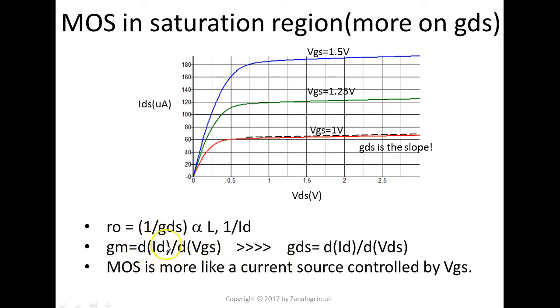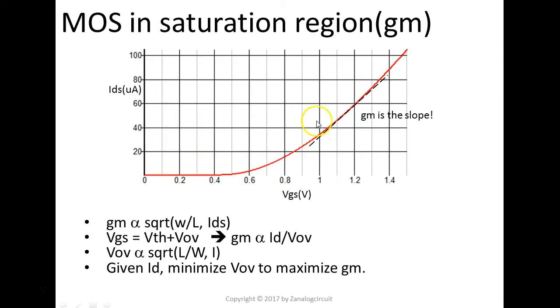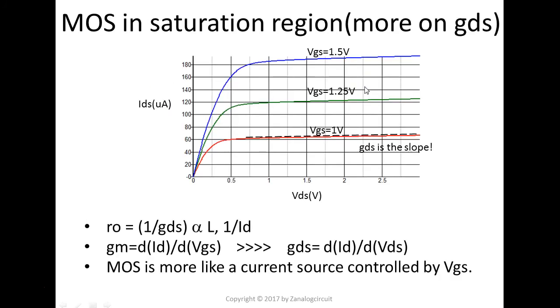If we look at the equation here, essentially, for the same amount of ID change, we require a lot less VGS change than VDS change. VDS change a lot, but the IDS barely change. When you go back to the last slides, the VGS change a little, IDS change quite a bit. The slope is different. Remember that.